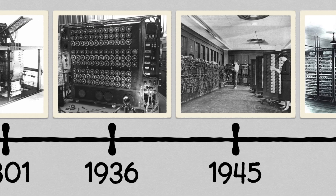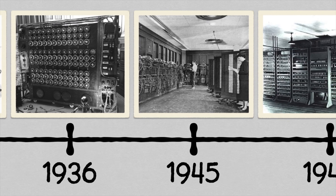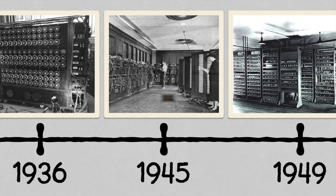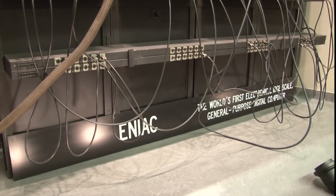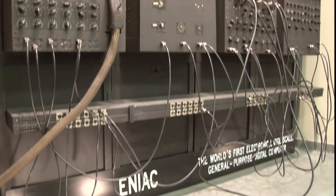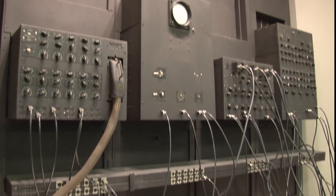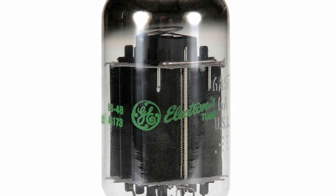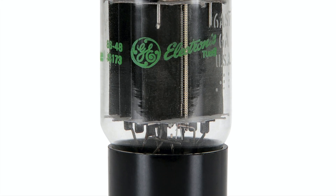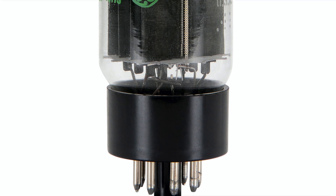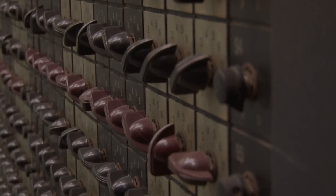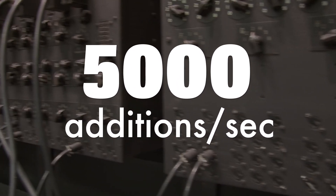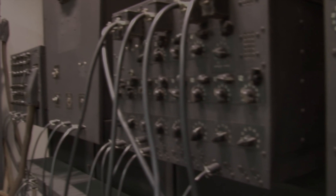The first non-mechanical computer didn't appear until 1945 with the ENIAC. Back then, mechanical gears were swapped by vacuum tubes because they were much faster, and therefore the ENIAC could add up to 5,000 numbers in just one second.